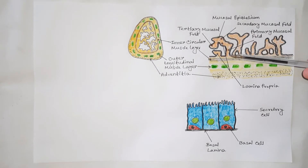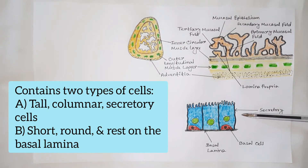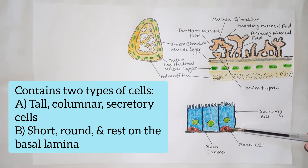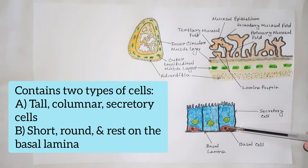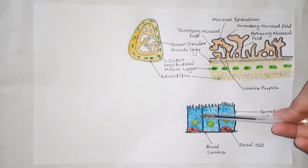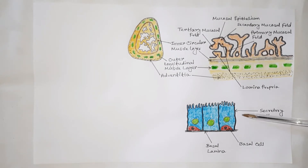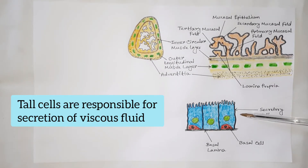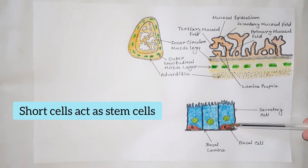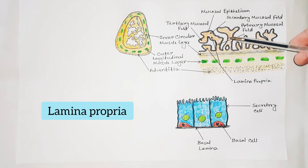This pseudo-stratified columnar epithelium contains two types of cells. One type are tall columnar secretory cells, and the other type are short, round cells that rest on the basal lamina. The tall columnar cells have well-developed rough endoplasmic reticulum and large secretory vacuoles in the apical cytoplasm, and are responsible for secretion of viscous fluid. The short cells are stem cells from which the columnar cells are derived.